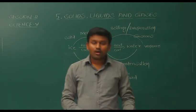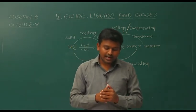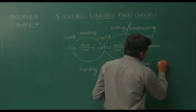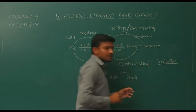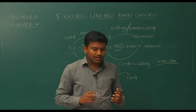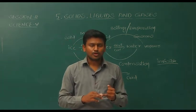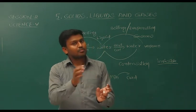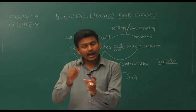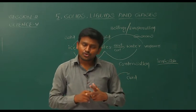Now let us solve some multiple choice questions. First one: matter is made up of tiny invisible particles called — with options atoms, molecules, or compounds. Matter is made up of molecules, and these molecules are further divided into atoms. Atoms are the smallest unit of a substance, and we cannot see molecules either. So the answer is molecules.